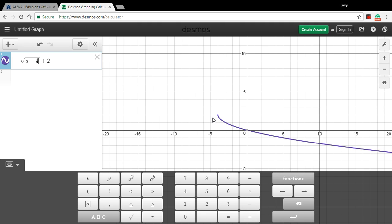And there we go, that's the function they were looking for. It's been translated up two and to the left four, and this is our formula. So k of x equals negative square root of x plus four plus two. I hope that helps.